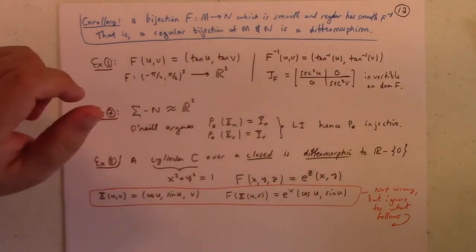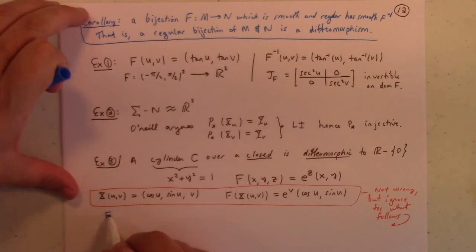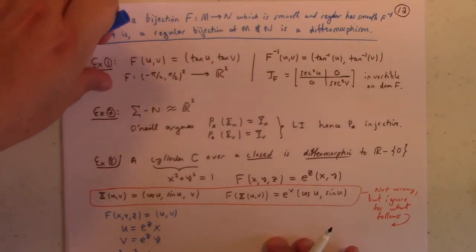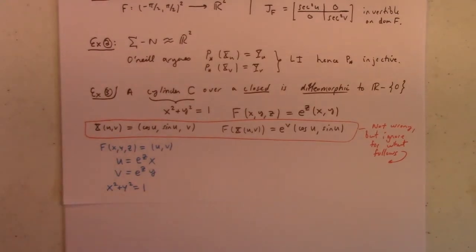All right. So, if we want to find the inverse map, to find the inverse of f, what we have to do is we set f of (x, y, z) equal to (u, v). That's why I'm saying to ignore, because this u and v are not the same u and v as I just used up there. So, that means we've got u equals e to the z times x, and we've got v is equal to e to the z times y. And we also happen to know that x squared plus y squared is equal to 1. That's actually really important to derive the formula.